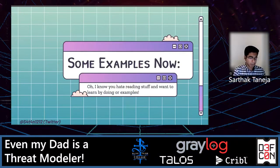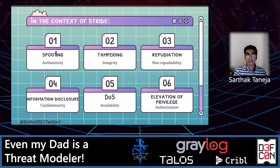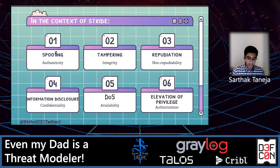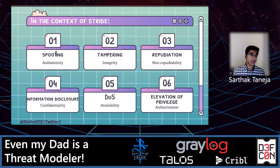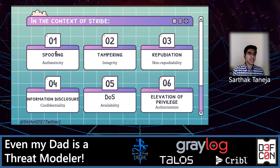Let's look at some examples of how threats look — we'll cover examples only in the context of STRIDE, because otherwise there would be too many examples across every framework. As I said, STRIDE stands for Spoofing, Tampering, Repudiation, Information Disclosure, DoS, and Elevation of Privileges. Each keyword in STRIDE impacts a particular parameter of the information security paradigm: spoofing impacts authenticity, tampering impacts integrity, repudiation causes non-repudiation issues, information disclosure is a breach of confidentiality, DoS is a breach of availability, and elevation of privileges is a breach of authorization.